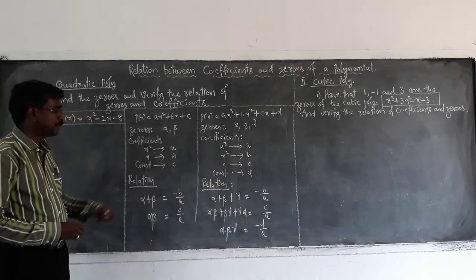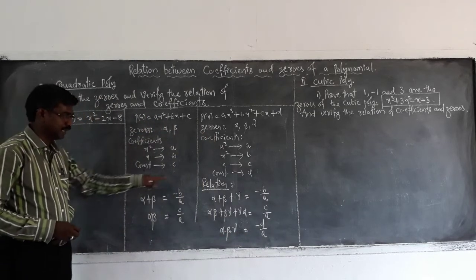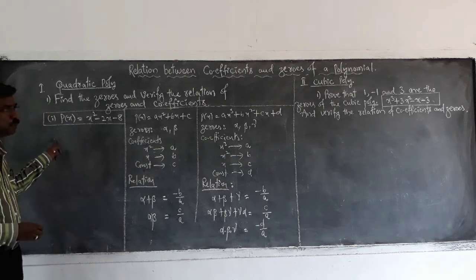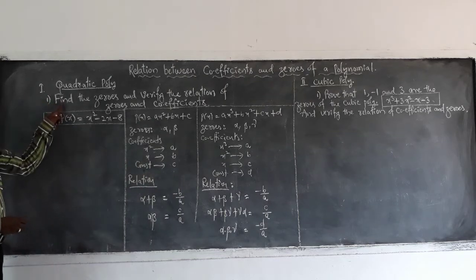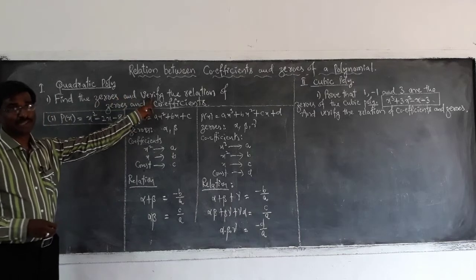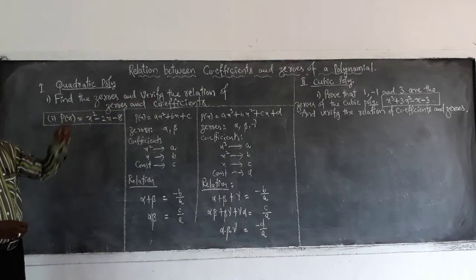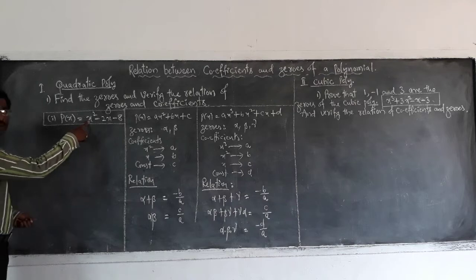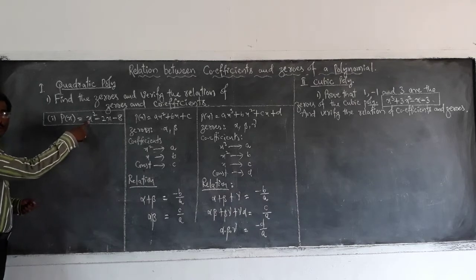So remember these relations. Now in according to these two types here we will have two problems. So here the question is about finding zeros and verifying the relation between the coefficients and zeros. So here is a quadratic polynomial. So we know how to find the zeros.